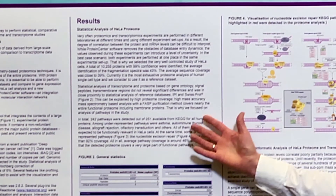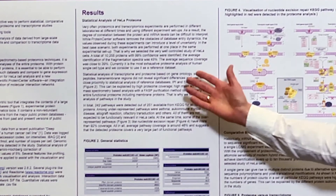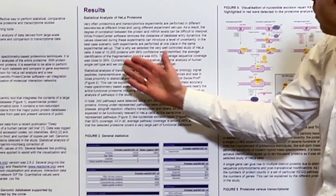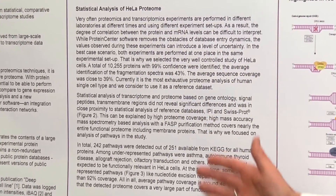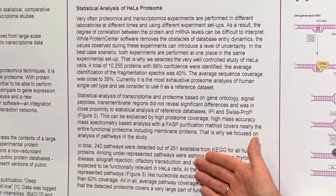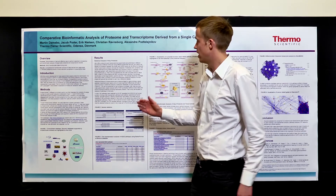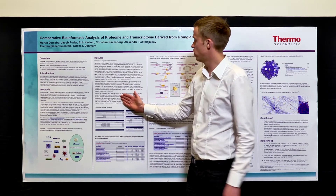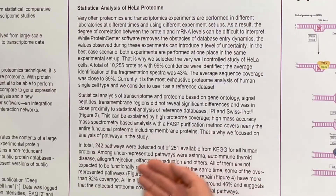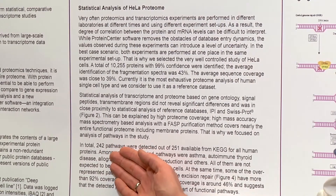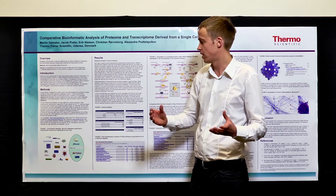The first results section describes the characterization of the HeLa proteome. As you can see, they analyzed over 10,000 proteins. We tried to find out how many pathways that actually covered in the HeLa cell line — meaning, functionally, did we actually cover the full cell line. Out of the 251 pathways described for the human KEGG database, we identified proteins for 242, which is a reasonably comprehensive functional description of the human cell line.